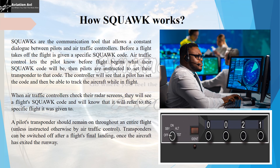These transponders also have a button labeled ident on them, as you can see in the image here. This button allows the pilot to identify themselves on the air traffic controller's screen. The pilot should avoid pressing this button unless asked by air traffic control, since pressing it enlarges the aircraft symbol and makes it temporarily bright on the radar screen, making it easier for the ATC to identify that specific aircraft. This can be used in situations of emergencies as well.